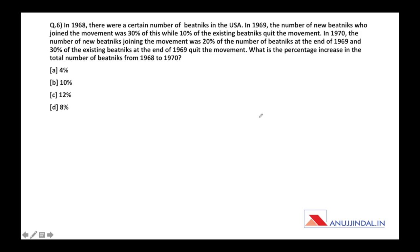Last question is also very easy, not difficult at all. Just one trick which is very simple. If you don't know anything, we assume 100. This assumption makes it easy. Question says: In 1968 there were a certain number of beatniks in USA. In 1969 the number of new beatniks who joined the movement were 30% of this while 10% of the existing beatniks quit the movement.